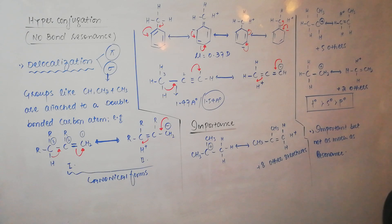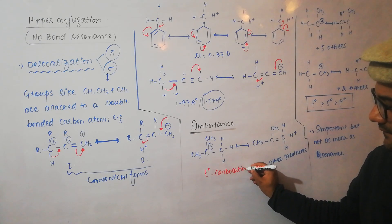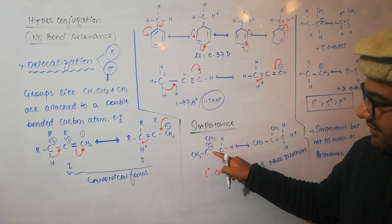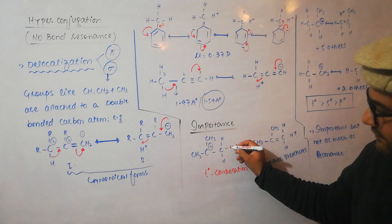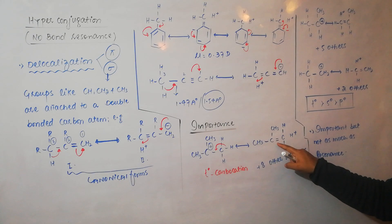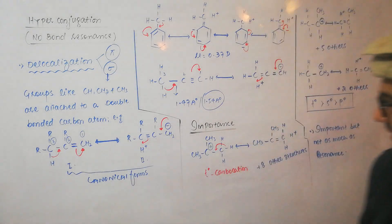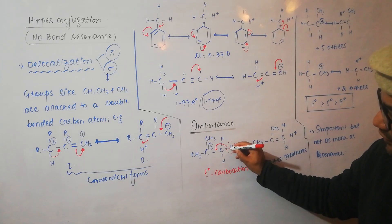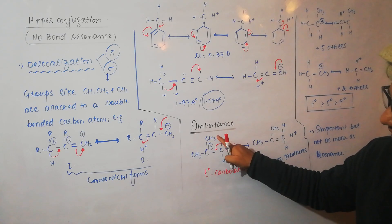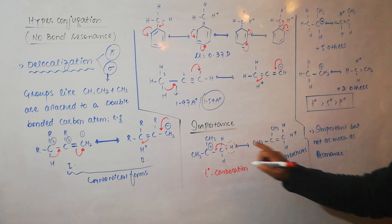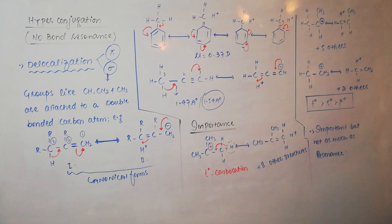Now, what is the importance of hyperconjugation? Consider a tertiary carbocation: there is a positively charged central carbon with three methyl groups attached. One hydrogen from a methyl group shifts its bond, creating a double bond between those two carbons and producing H-positive — no-bond resonance again. Now, if this single hydrogen can do this, each hydrogen in the three methyl groups can participate. That gives 3×3 = 9 structures total; the one shown accounts for one, leaving eight other canonical structures for the tertiary carbocation.